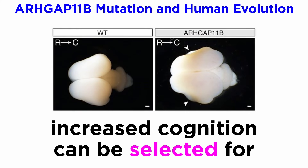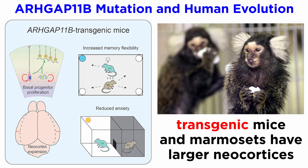Increased cognition would be subject to the second mechanism of evolution, natural selection, in that it would potentially benefit fitness and be selected for. Fascinatingly, ARHGAP-11b works the same way in other primates. Scientists inserted the human-specific gene into fetal marmosets, a small new world monkey, and saw an enormous increase in the size of their neocortex, as well as the characteristic folding of the surface. And all of this change is derived from two common types of mutation.